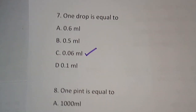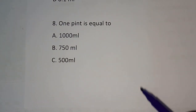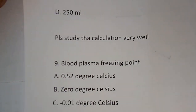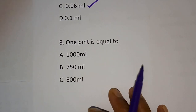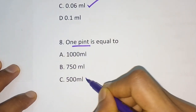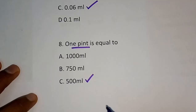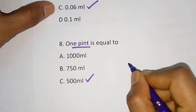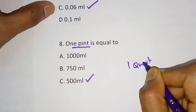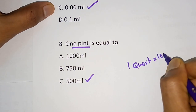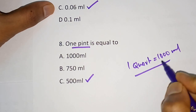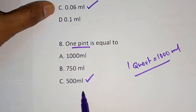Question number 8: 1 pint is equal to? Options are 1000 ml, 750 ml, 500 ml, and 250 ml. The correct answer is 500 ml. Also note that 1 quart is equal to 1000 ml. These values are according to the metric system.